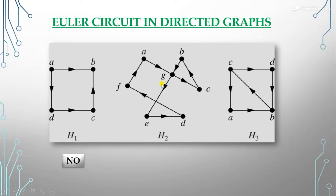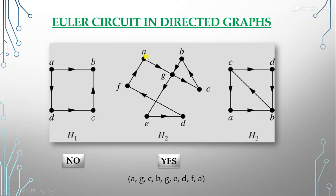The second directed graph does form an Euler circuit. The path is a, g, c, b, g, e, d, f, a — we start and end at vertex A and cover all edges without repetition.